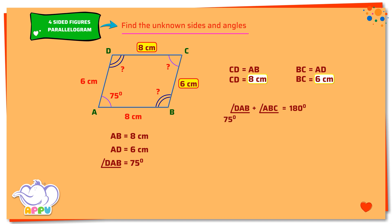75 degrees plus angle ABC equals 180 degrees. Next, we subtract 75 degrees from both sides. Angle ABC equals 105 degrees.